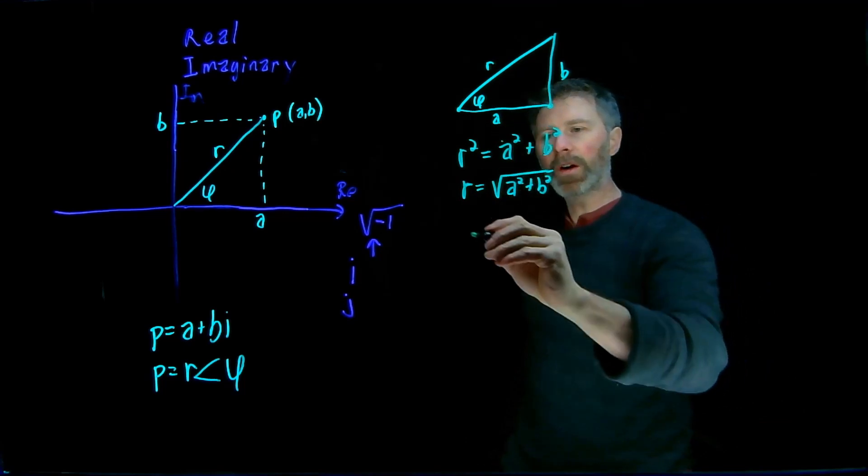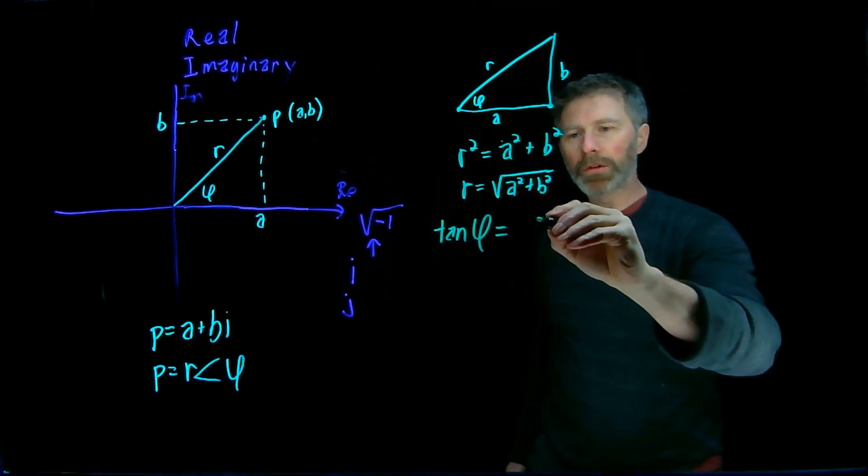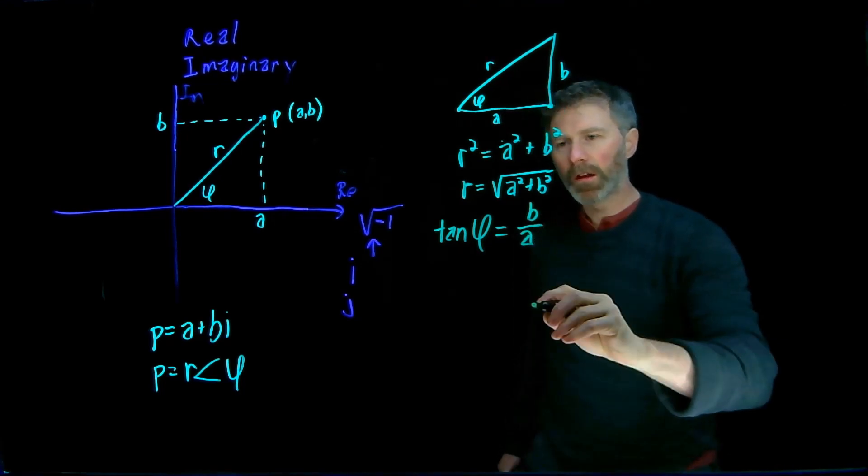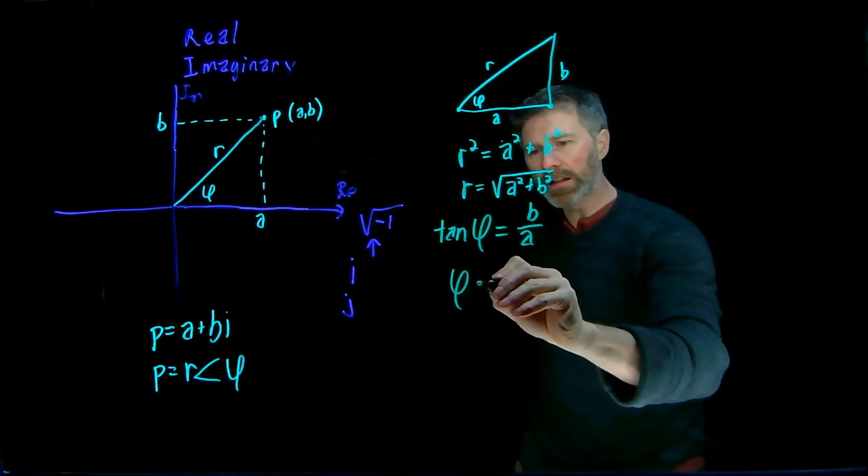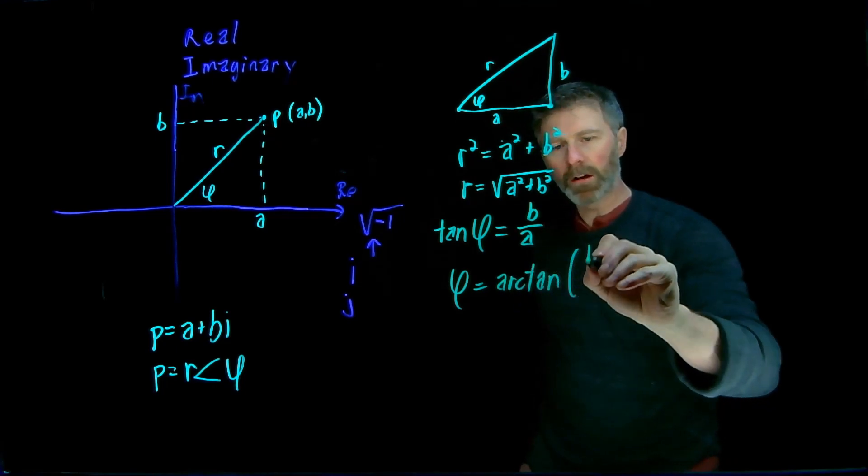And with phi, we can see that the tangent of phi is equal to B over A. And therefore, phi is equal to the inverse tangent or the arc tangent of B over A.